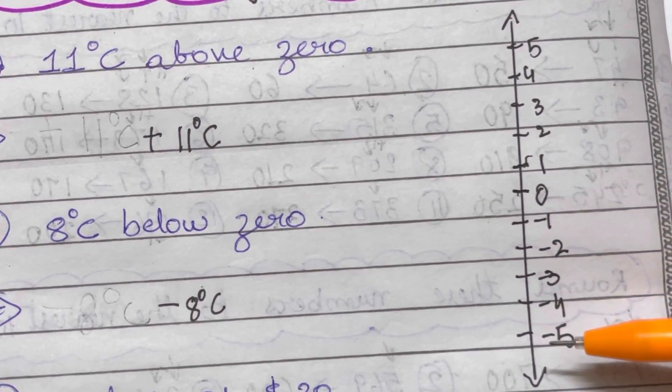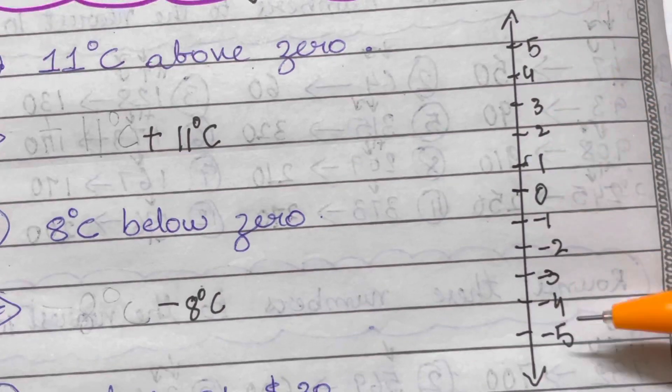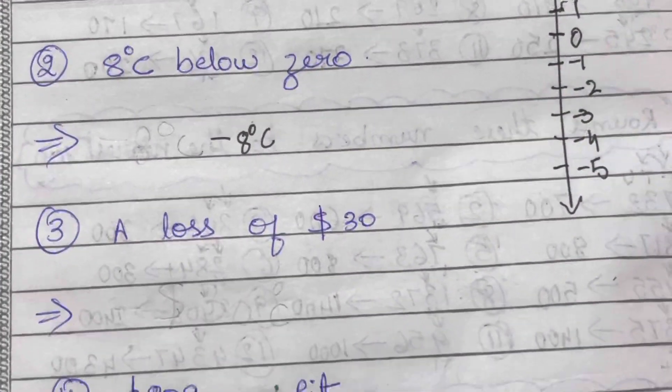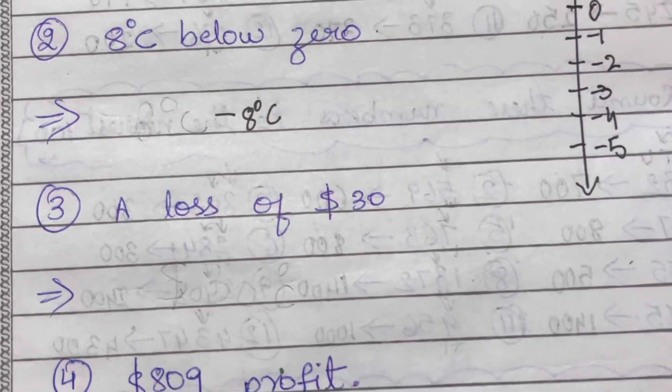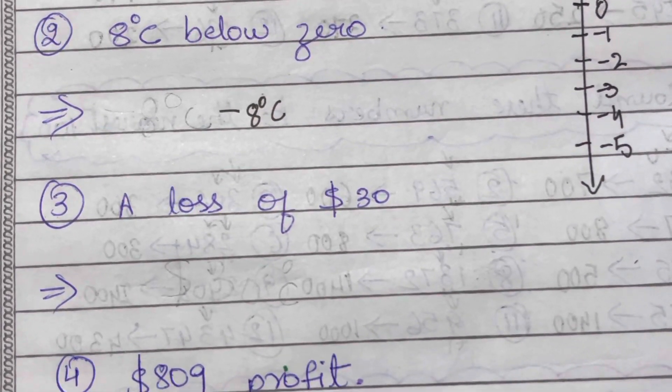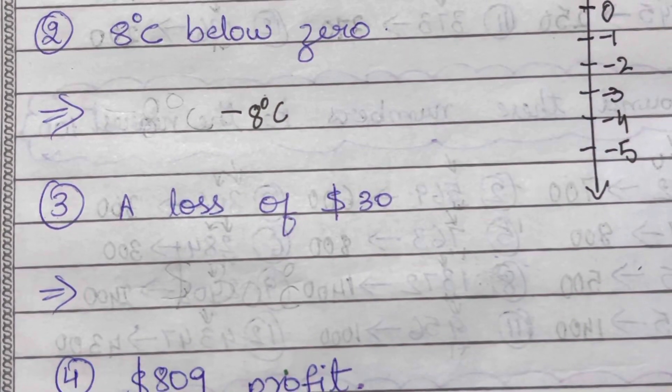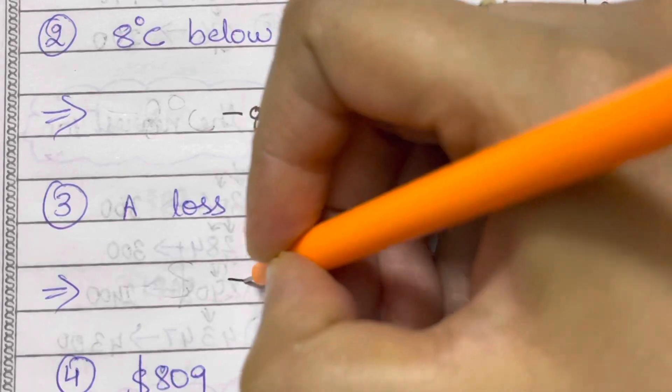A loss of 30 dollars. A loss of 30 dollars can be represented by a negative number because it's a loss - that's something which you have faced. A loss of minus 30 dollars, so it will be represented by a negative sign.